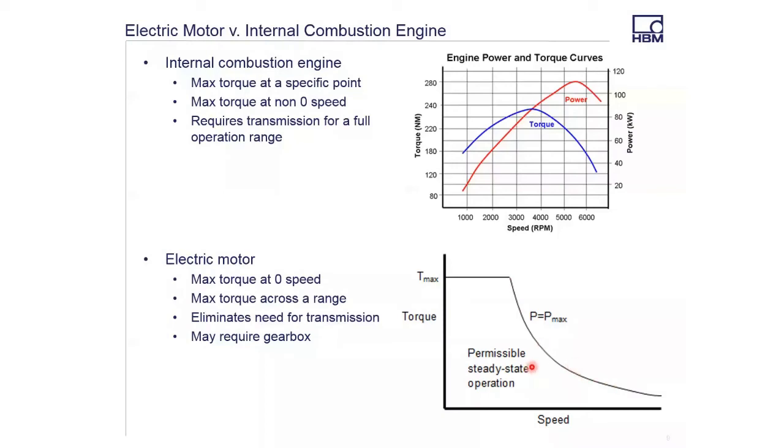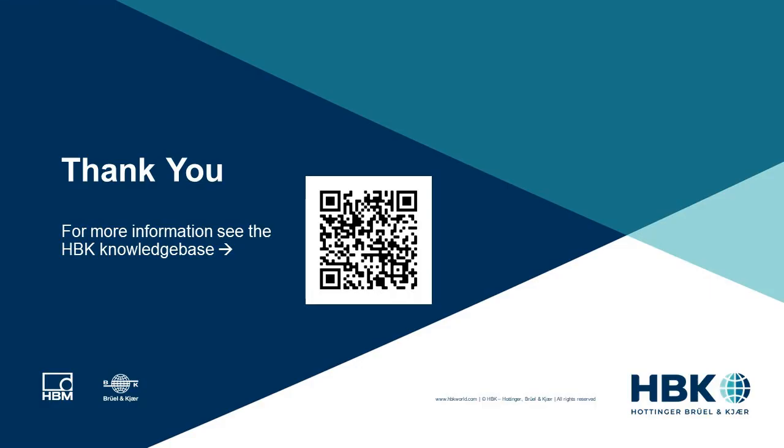This allows us to eliminate a transmission and often clutches from a pure electric vehicle. These electric machines can spin at very high speeds, up to about 20,000 RPM for high power applications. They may still require a gearbox, and I mention the gearbox because that's going to be a big part of torque ripple and why we care.